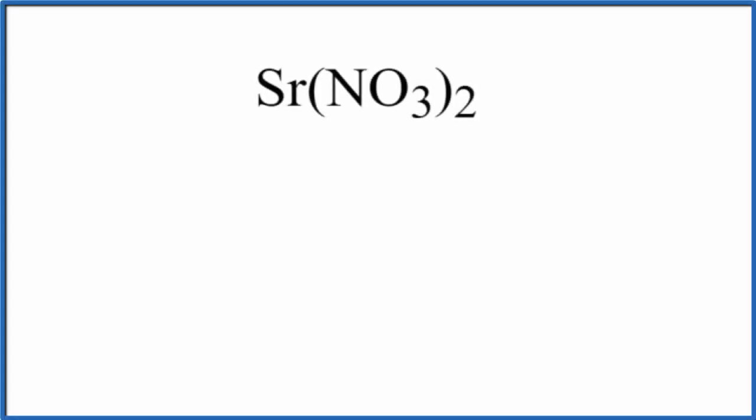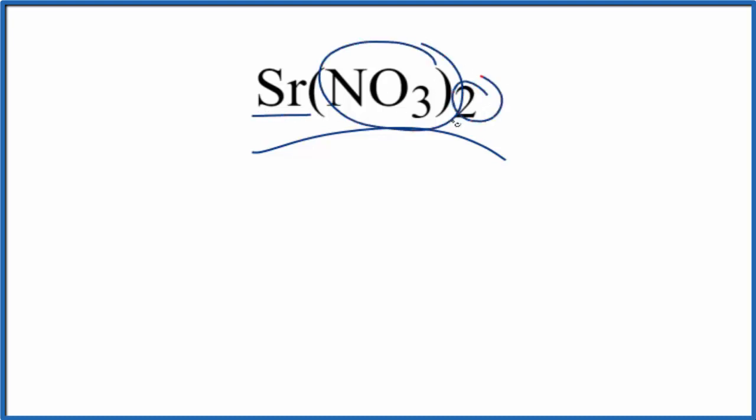In this video, we'll write the Lewis structure for Sr(NO₃)₂. That's strontium, and this is the nitrate ion. We have two of them.